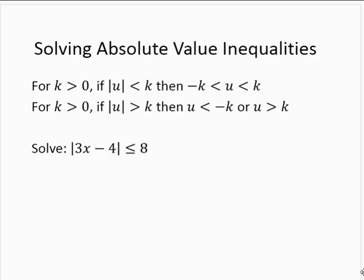Now when we have inequalities, it's a little bit more difficult. If we have an absolute value inequality that's a less than — so the absolute value of u is less than a number — we put the inside of the absolute value between the opposite of the number and the number itself, giving a three-part inequality. And if we have a greater than inequality, it splits up into two inequalities combined by an or: u is less than negative k, or u is greater than k.